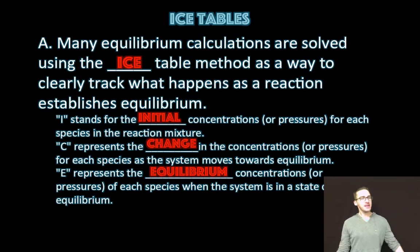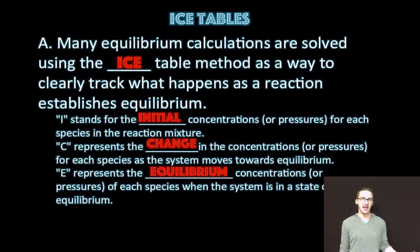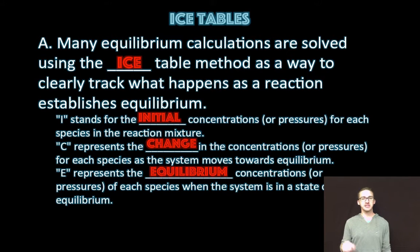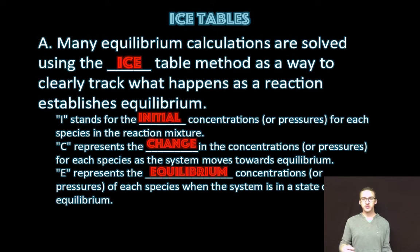Many equilibrium calculations are solved using what we call the ICE table method as a way to clearly track what happens as a reaction establishes equilibrium. I stands for the initial concentrations or pressures for each species in the reaction mixture. C represents the change in concentrations or pressures for each species as the system moves towards equilibrium. And E represents the equilibrium concentrations or pressures of each species once the system is in the state of equilibrium.